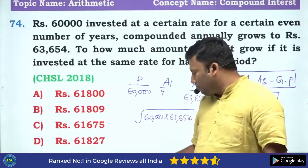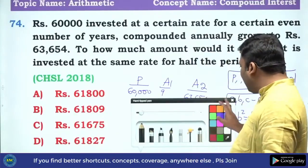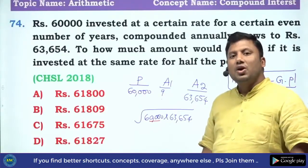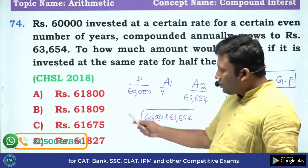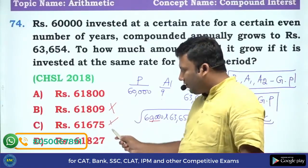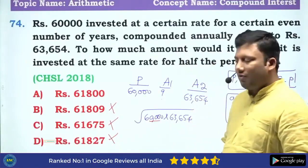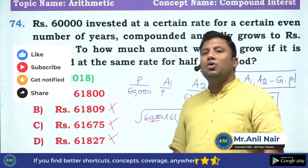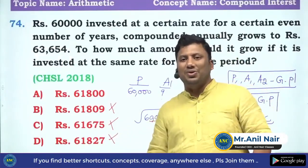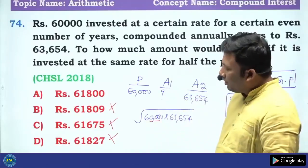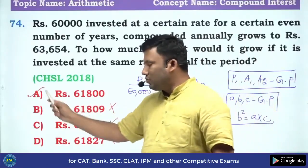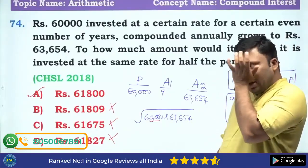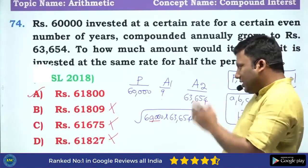You don't need to fully compute this. The answer options are straightforward. The expression under the square root contains four zeros, so after taking the square root the answer should contain two zeros — finish. The answer is 61,800. I hope the idea is clear.